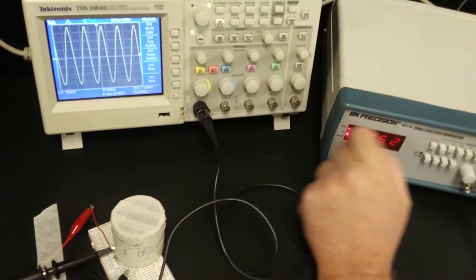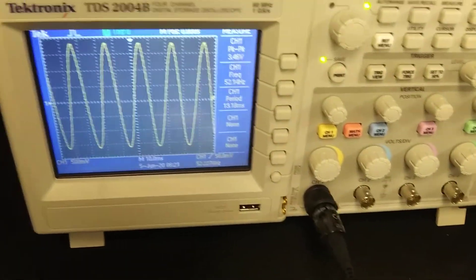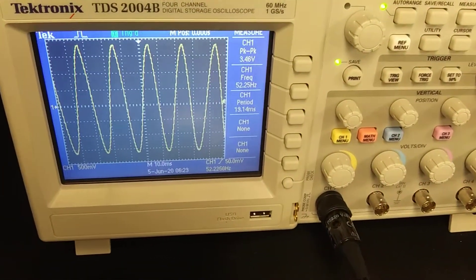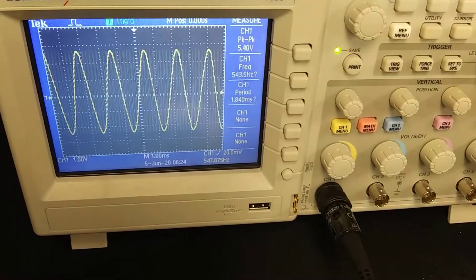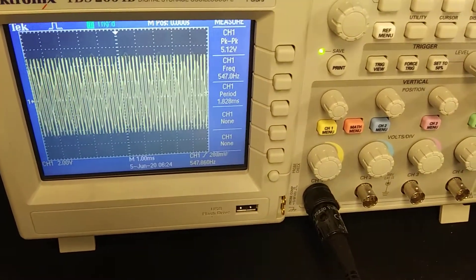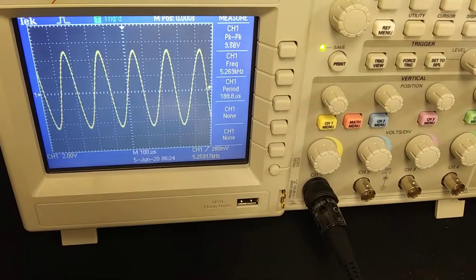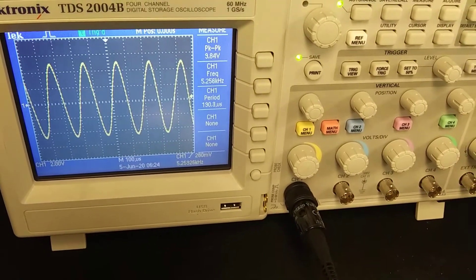So right now at 50 Hz you can see it's about 3.46. Let's start going upwards. At about 500 Hz you get 5 volts peak-to-peak. At 5,000 Hz you get about 9.8 volts peak-to-peak.